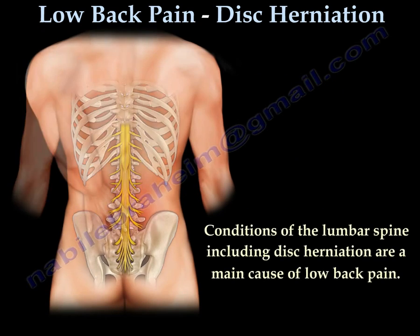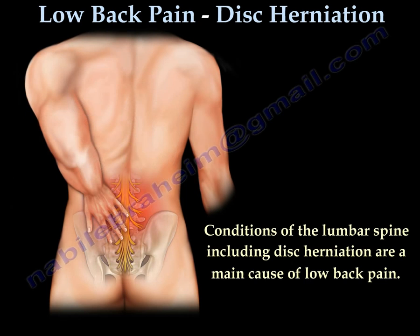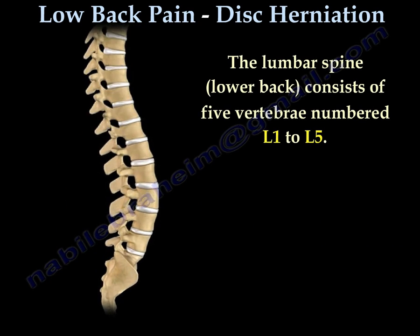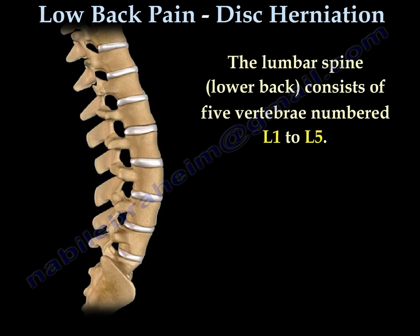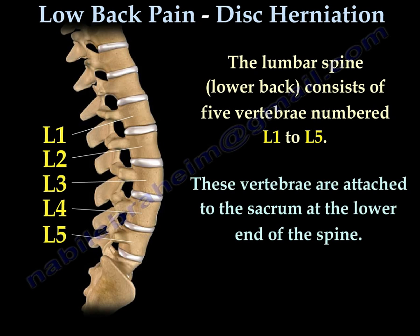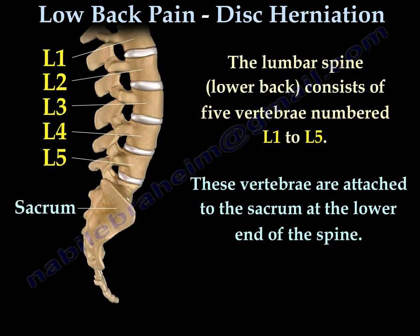Different conditions of the lumbar spine, including disc herniation, are the main cause of low back pain. The lumbar spine, which is the lower back, consists of five vertebrae: L1, L2, L3, L4, and L5. These vertebrae are attached to the sacrum, the tailbone, at the lower end of the spine.